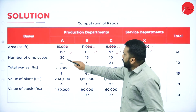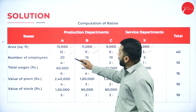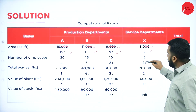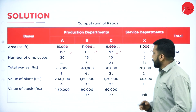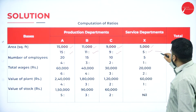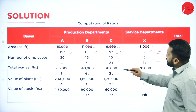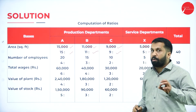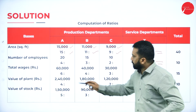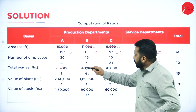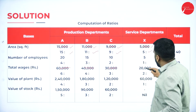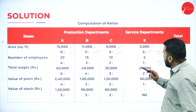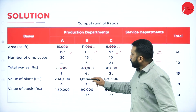For number of employees: 20, 15, 10, 5 — already explained, from the table of 5, the ratio is 1:2:3:4. For wages totals 20,000; 30,000; 40,000; 60,000 — 4 zeros are common in all, cancel them. You get 2, 3, 4, 6. Can you simplify again? 2, 4, 6 can be divided by 2, but 3 cannot, so stop there. The final answer is 2:3:4:6.